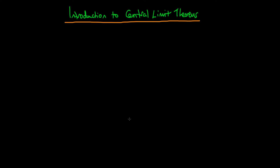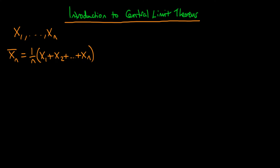In this video I wanted to provide an introduction to central limit theorems. To start thinking about this concept, we're first going to think about a sequence of random variables x1, x2, through to xn. We're going to think about what happens if we take the sample mean of those n observations: 1/n times (x1 + x2 + ... + xn). We know from the weak law of large numbers that x̄ₙ tends in probability to the population mean μ, where μ refers to the mean of an individual xᵢ.